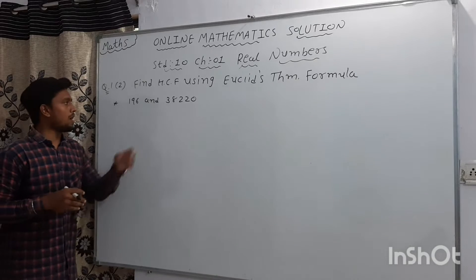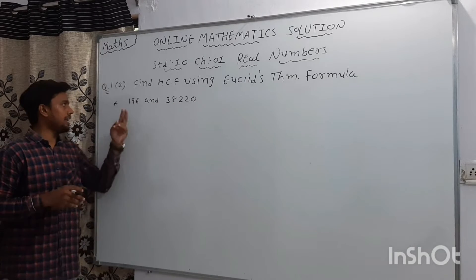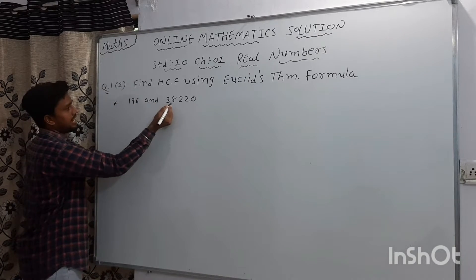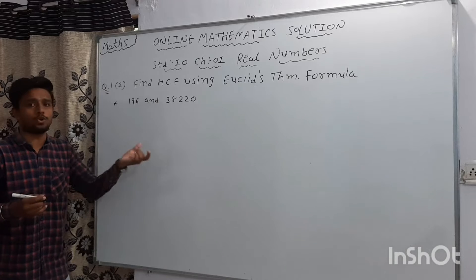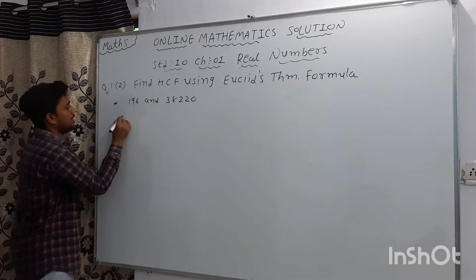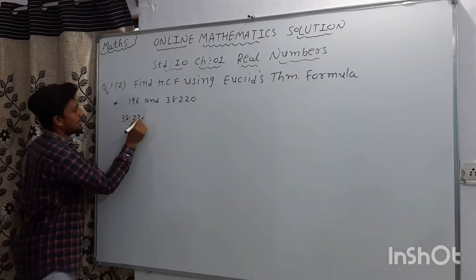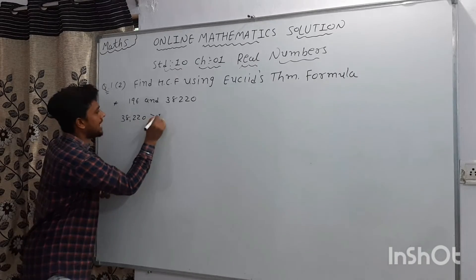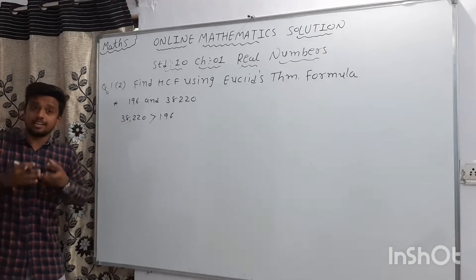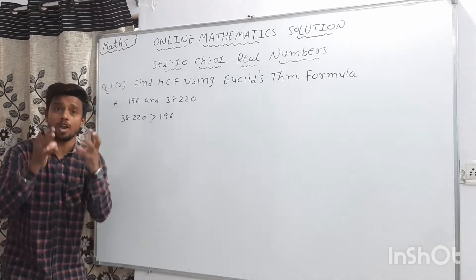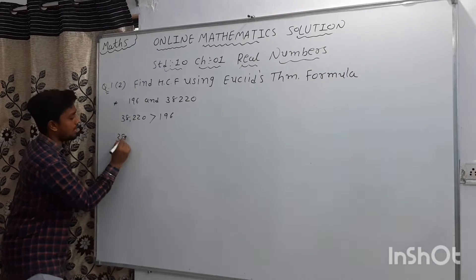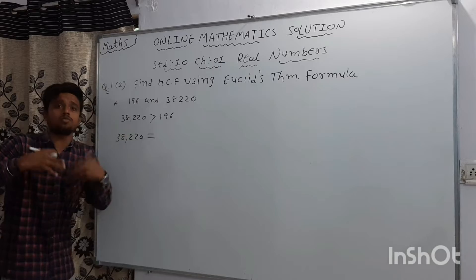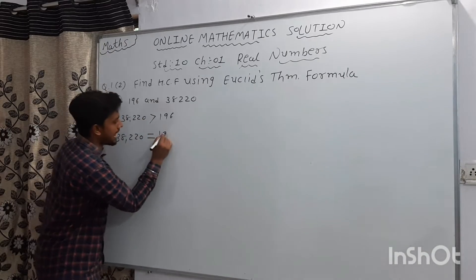Today we are going to learn about 38,220 and 196. The sum is 38,220 and 196. We should write the larger number first of all, 38,220. Here 38,220 is greater than 196. We all know that the larger number is equal to smaller number, so we have to write 38,220 equal to smaller number. The smaller number is 196.